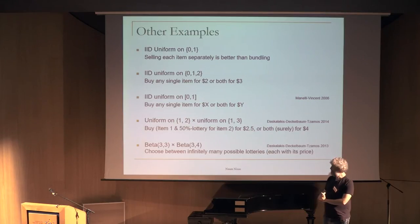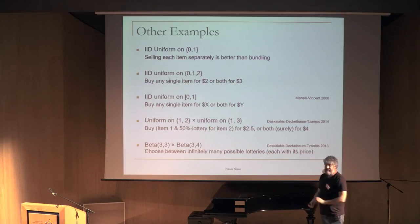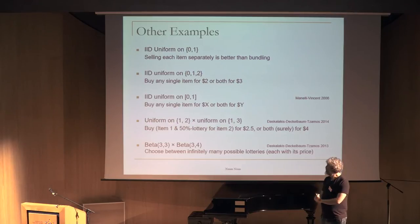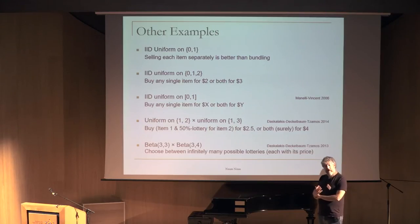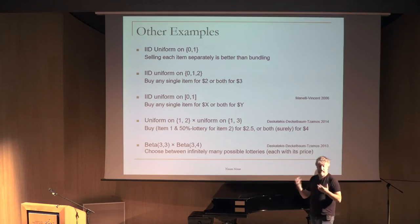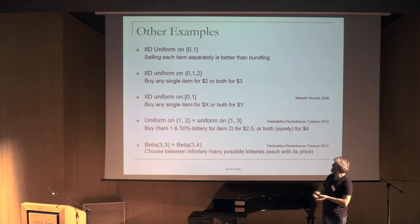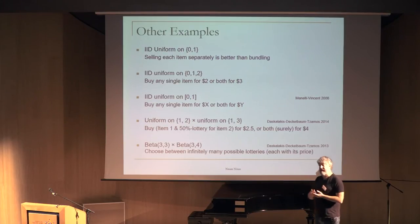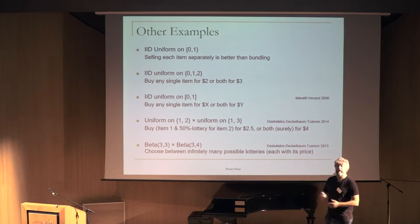More exotic things happen too. For uniform distributions on [1,2] and [1,3], the optimal auction is randomized: you can get the first item plus a 50% chance of the second for $2.50, or both for $4 — and that's the unique optimal. Apparently, for beta(3,3) and beta(3,4) distributions, the optimal auction has infinitely many menu entries, and that's the unique optimal auction.